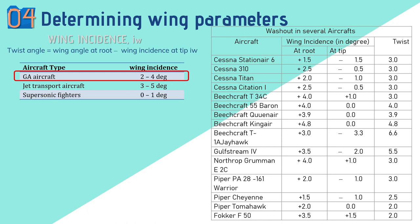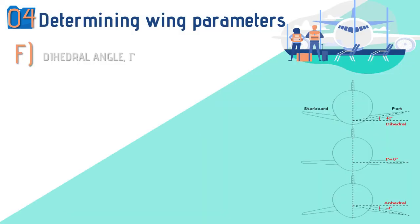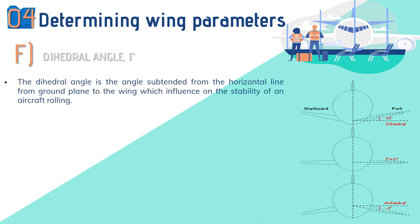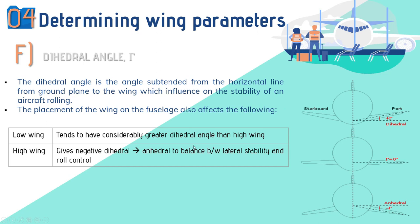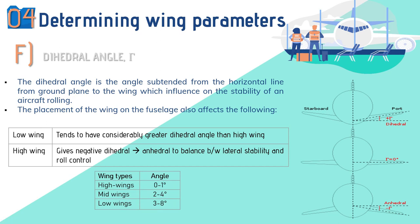Dihedral angle is the angle subtended from the horizontal (ground plane) to the wing, which influences lateral stability. Dihedral placement depends on the wing position on the fuselage. Low-wing configurations tend to have considerably greater dihedral than high-wing configurations. For a high-wing passenger aircraft, a negative dihedral (anhedral) is used to balance lateral stability and roll control. Reference parameters: high wing has 0–1 degrees, while low wing can use 3–8 degrees of dihedral.